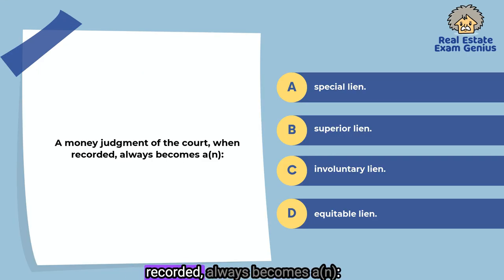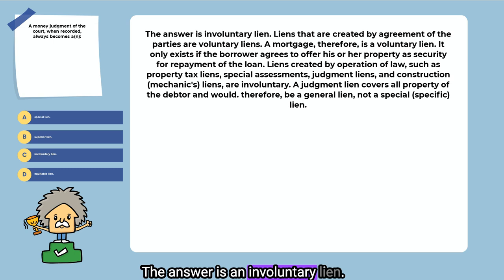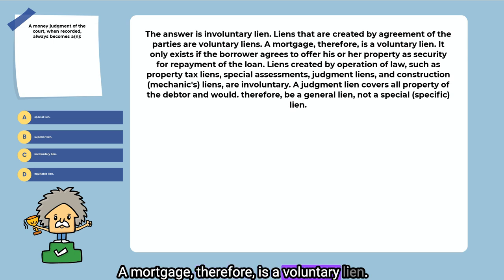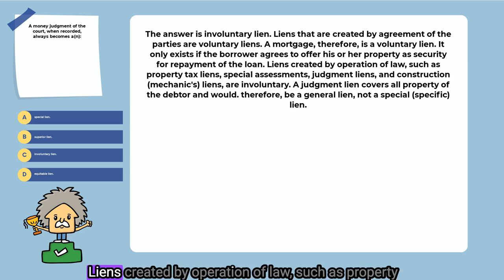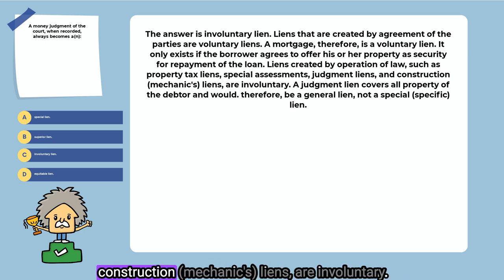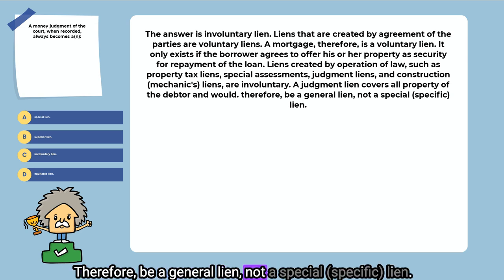A money judgment of the court, when recorded, always becomes an involuntary lien. Liens that are created by the agreement of the parties are voluntary liens. A mortgage, therefore, is a voluntary lien — it only exists if the borrower agrees to offer his or her property as security for repayment of the loan. Liens created by operation of law, such as property tax liens, special assessments, judgment liens, and construction liens, are involuntary. A judgment lien covers all property of the debtor and would, therefore, be a general lien, not a special lien.